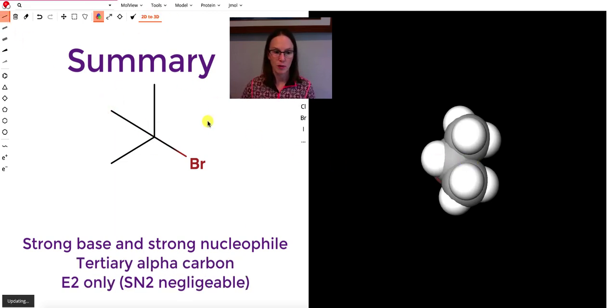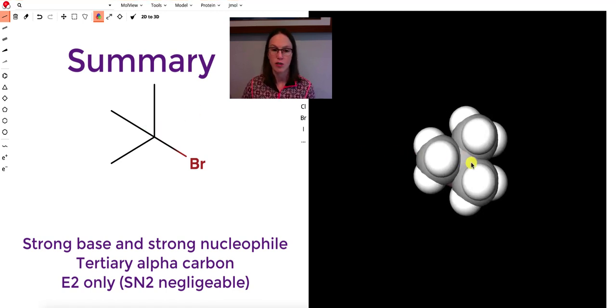And then as soon as we get to a tertiary alpha carbon, that access to that alpha carbon is so hard, so difficult, such a high activation energy that we don't even see the SN2 reaction anymore, and it's all E2.